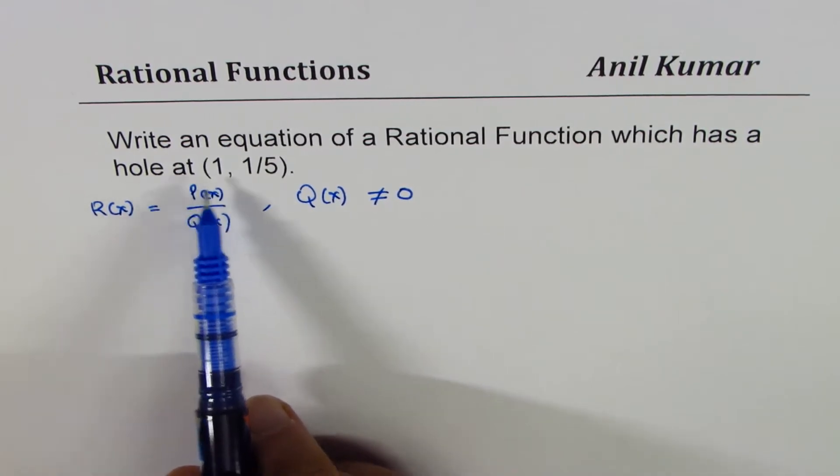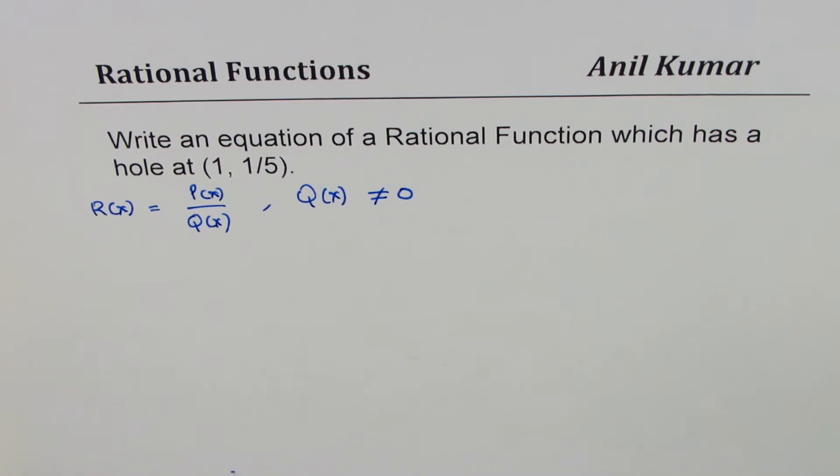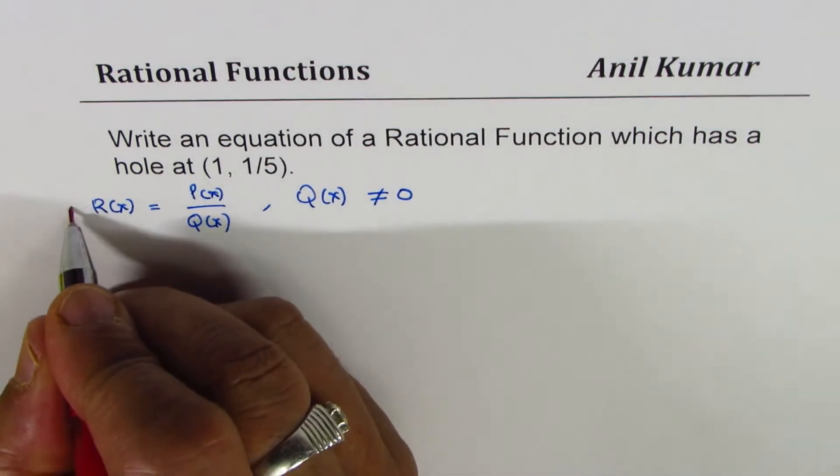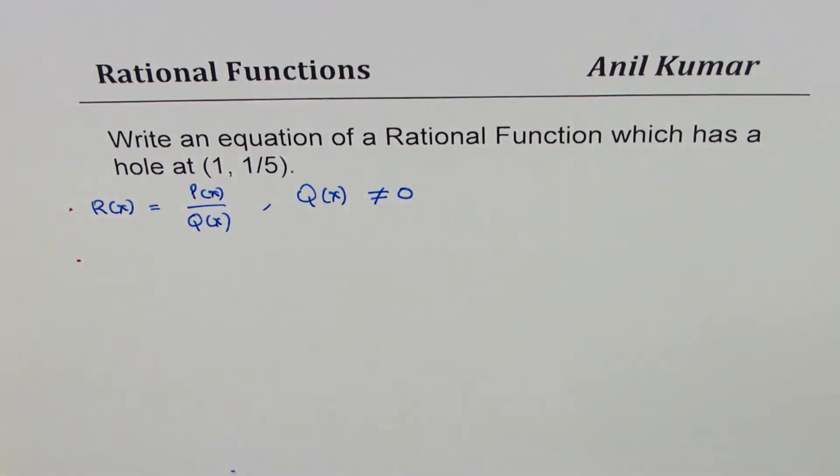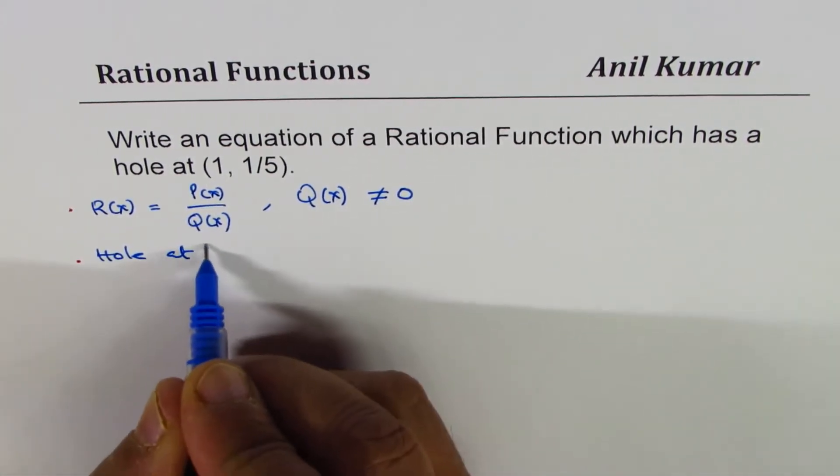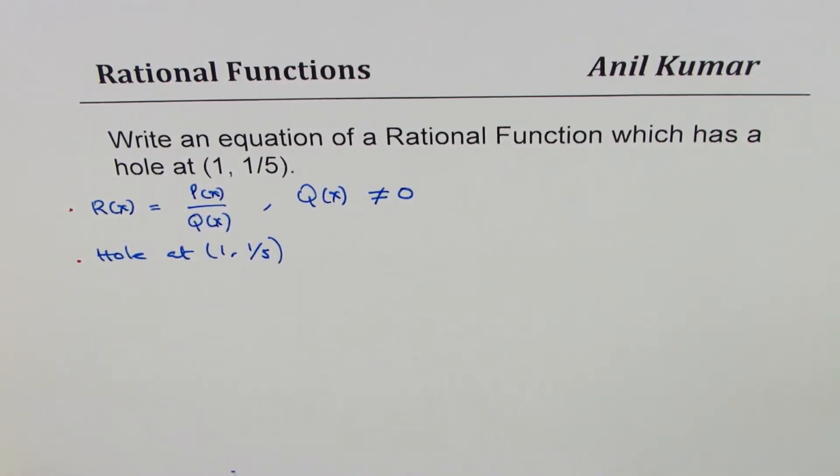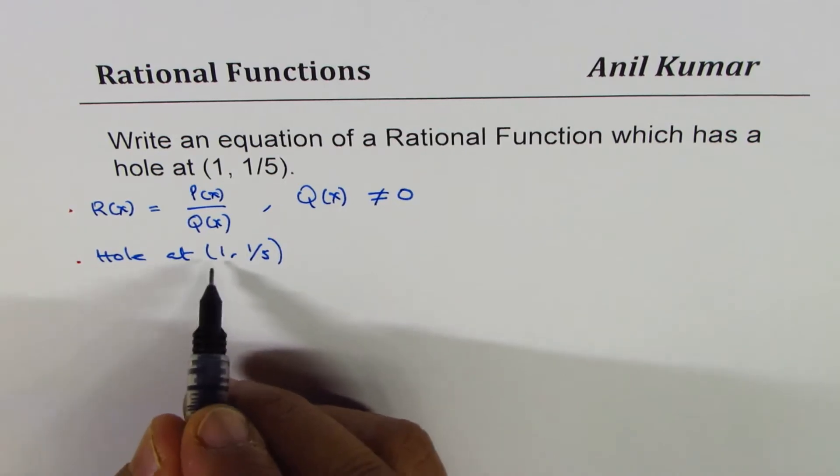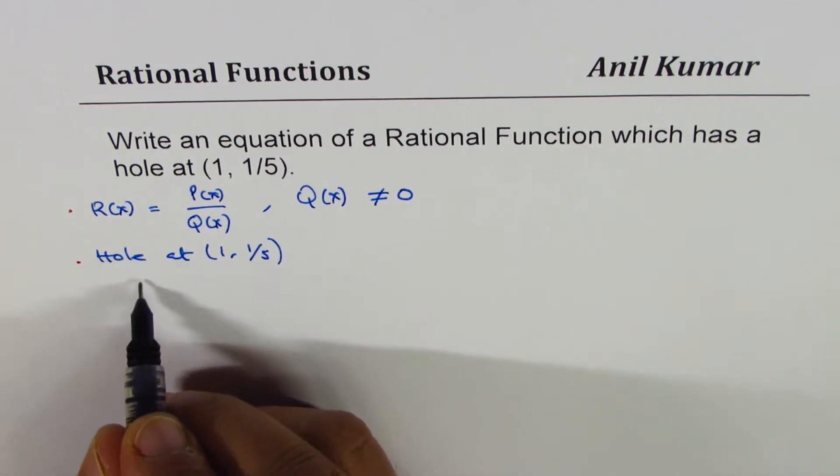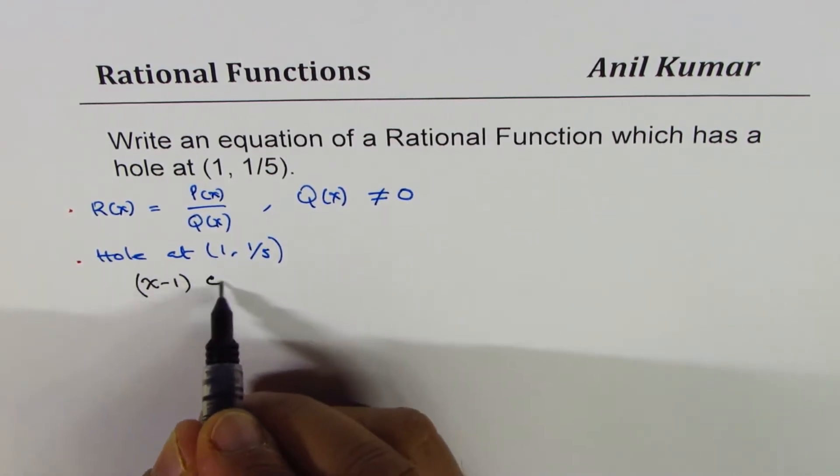Now, hole at (1, 1/5) means what? Let's understand that. A hole at (1, 1/5) means two things. One, we have a common factor in numerator and denominator which is (x-1). Now (x-1) is a common factor in P(x) and Q(x).